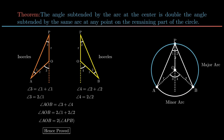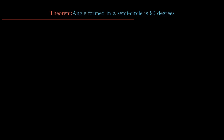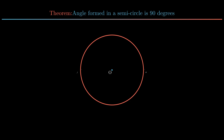Moving on to the next theorem: the angle in a semicircle is 90 degrees. Consider a circle with center O. Let A and B be points on the circle such that AB acts as the diameter, resulting in the formation of two semicircles. Angle AOB measuring 180 degrees is formed at center point O. Now consider a point P on one of the semicircles, and join the endpoints of the diameter with point P.